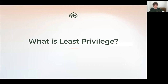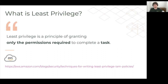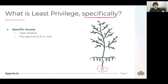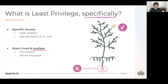So what is least privilege? Least privilege is the principle of granting only the permissions required to complete a task — a quote from Amazon, which seemed quite succinct. More specifically, it's specific access, it's task-related, and it's not general, otherwise known as root. We want the permission that is highly specific, and even more specific by having it time-limited and short-lived, with the capability to audit when we use that access.